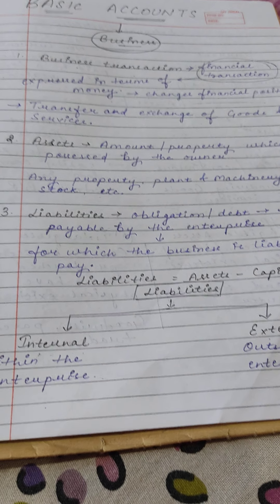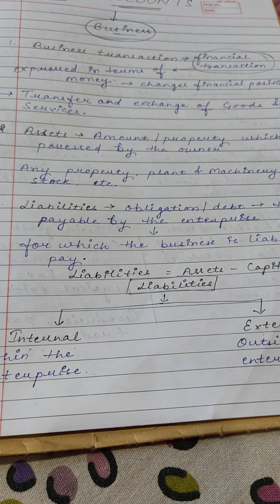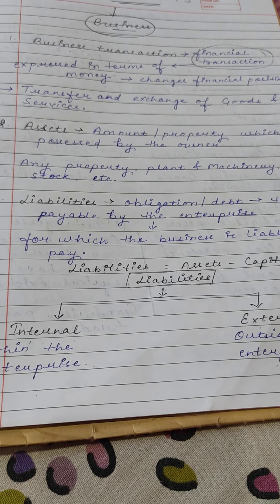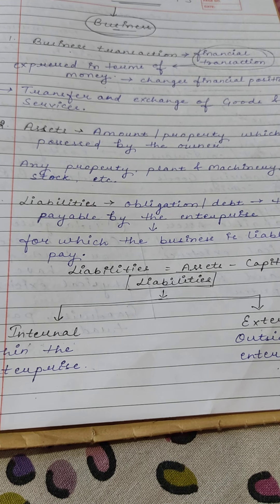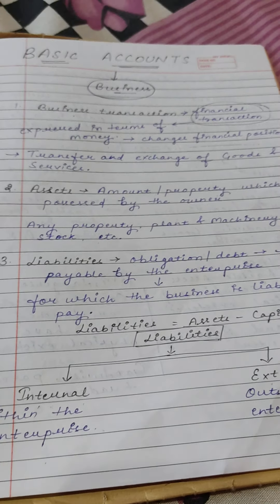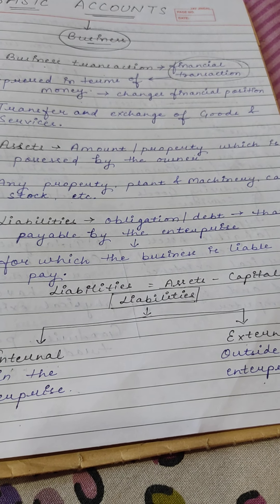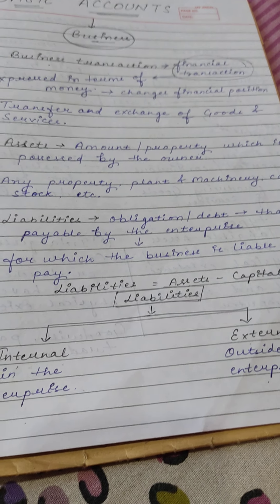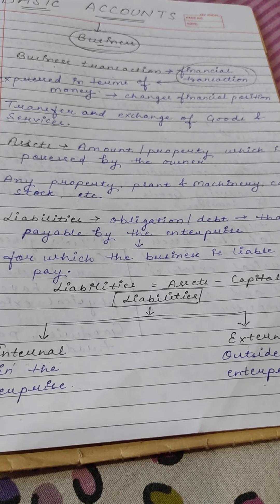Our second term is assets. Assets are any amount or property which is possessed by the owner — anything owned by the owner of the business.